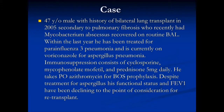We'll start with a case — a patient seen at USF: a 47-year-old male with a history of bilateral lung transplant in 2005 secondary to pulmonary fibrosis. He recently had Mycobacterium abscessus recovered on a routine BAL. Within the last year he was treated for parainfluenza 3 pneumonia and was on voriconazole for Aspergillus pneumonia. Immunosuppression consists of cyclosporine, mycophenolate, and prednisone 5 mg daily.